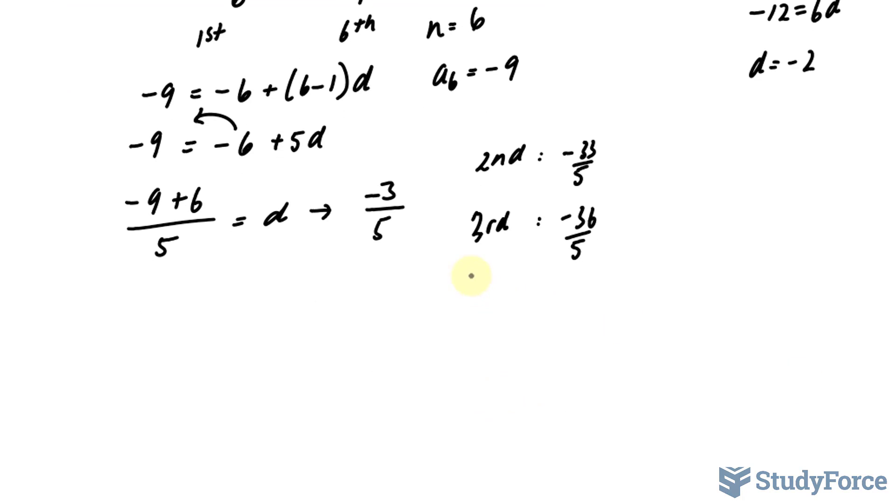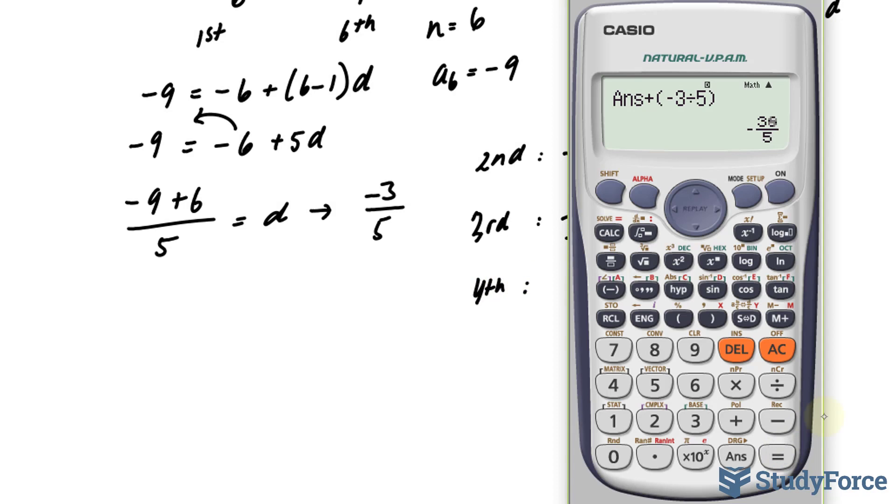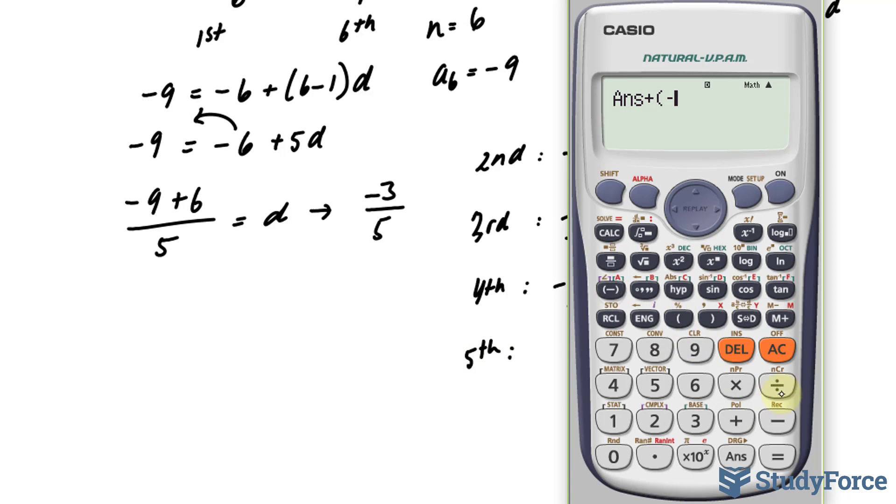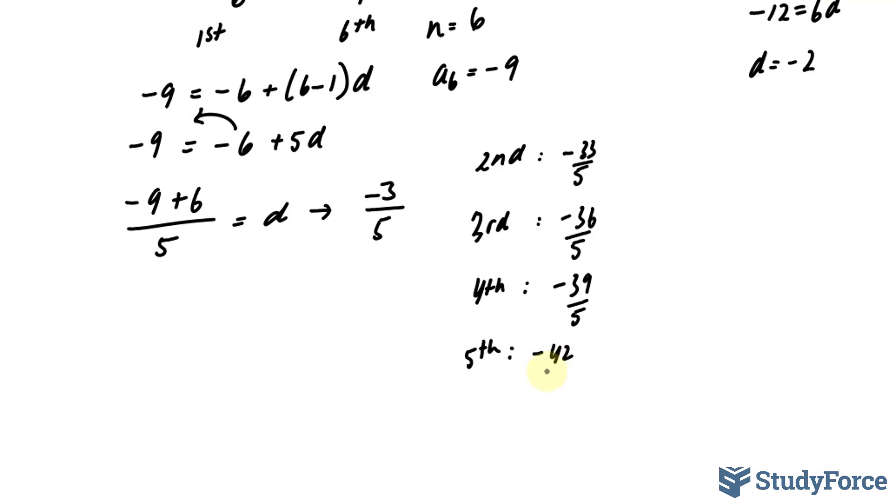Two more to go. The fourth number will be negative 39 over 5, and the fifth number will be negative 42 over 5.